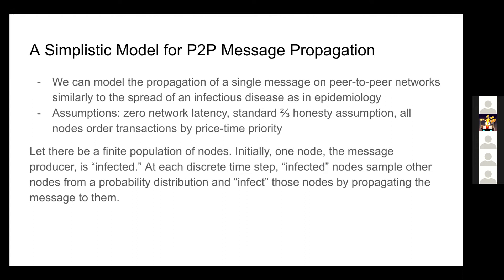This is a rough sketch of a model of message propagation — or an analogy, because I think the comparison makes sense — that we're going to be using. In this initial state, it's usually an RPC provider or some trader's local node that originates the transaction, and then the messaging protocol propagates that message to other nodes on the network. I'm going to focus specifically on how different messaging protocols affect the strategies of MEV searchers.